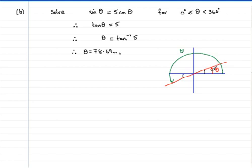It's not an exact diagram. I know that doesn't look like 78 odd degrees, but that's not the point. It's just to show us which quadrants theta will lie in. So it lies in the first quadrant for 78.69 degrees. Now we need to get the green theta.